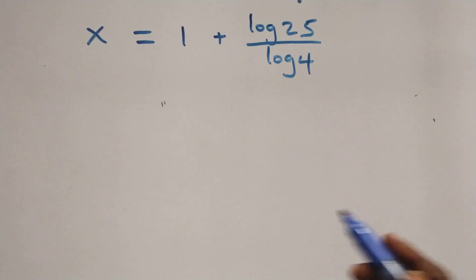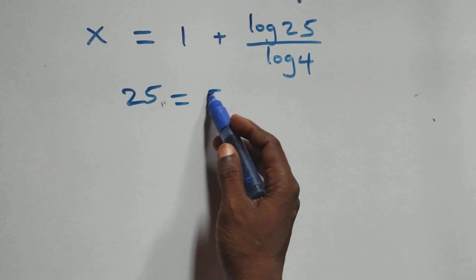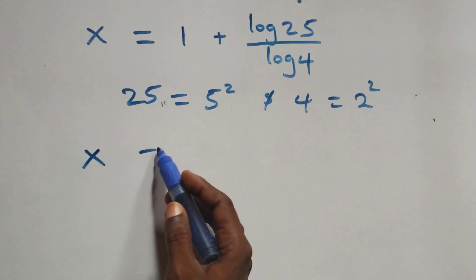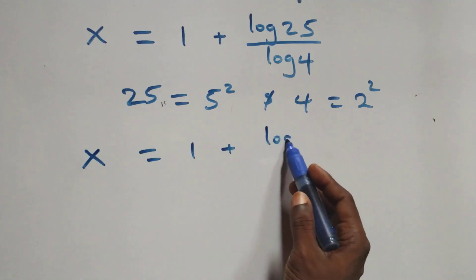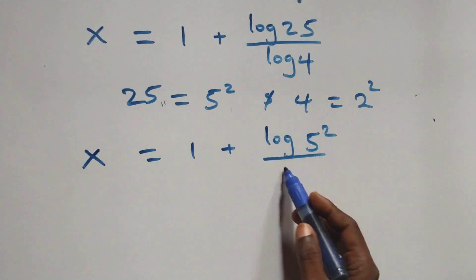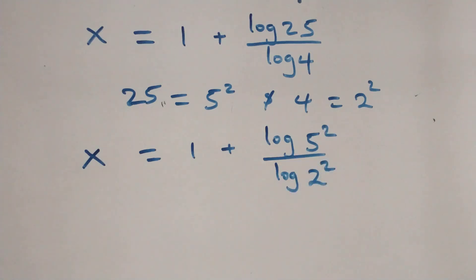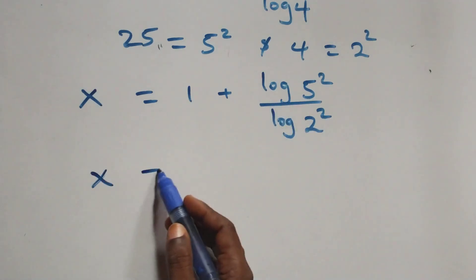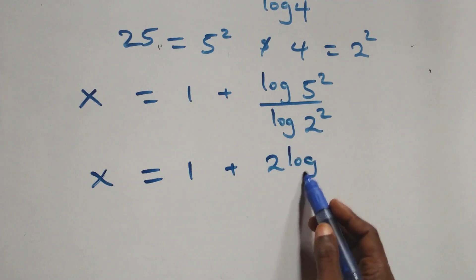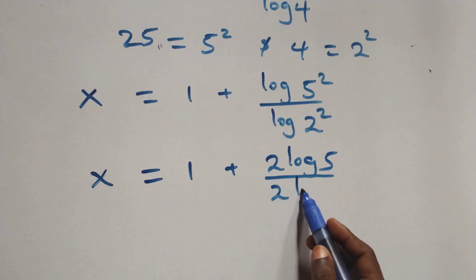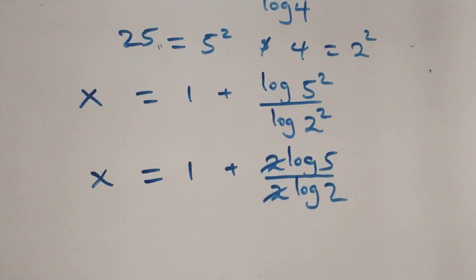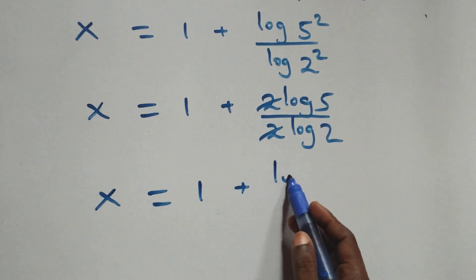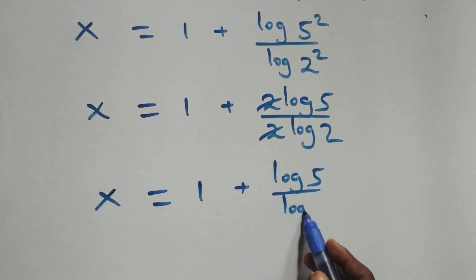Then here we can express 25 as 5 times 5 — that's 5 squared — and also 4 as 2 times 2, that's 2 squared. So what we have becomes x equals 1 plus log(5 squared) over log(2 squared). We apply the power law of logarithms, so 2 comes out in both numerator and denominator. This becomes x equals 1 plus 2 log 5 over 2 log 2, and the 2s cancel, giving x equals 1 plus log 5 over log 2.